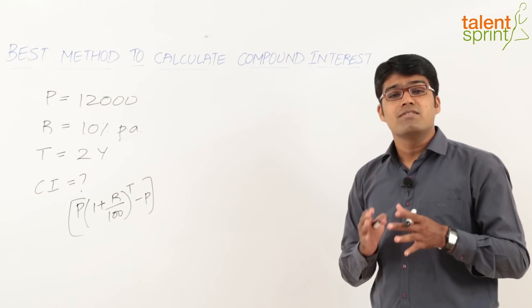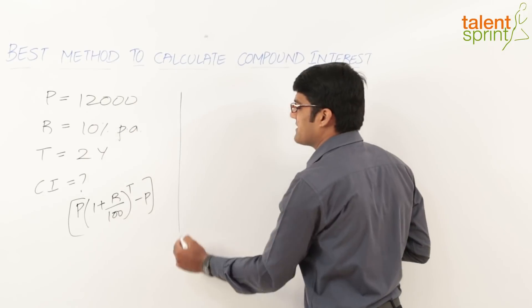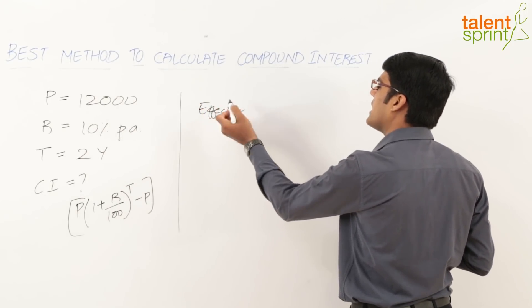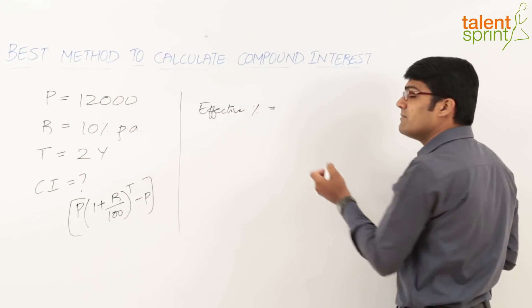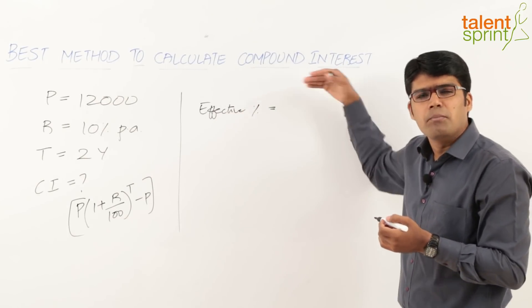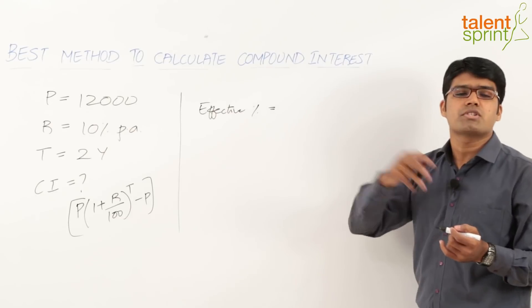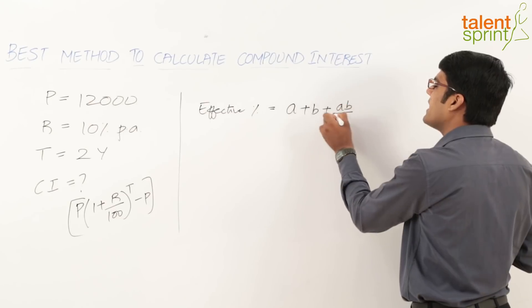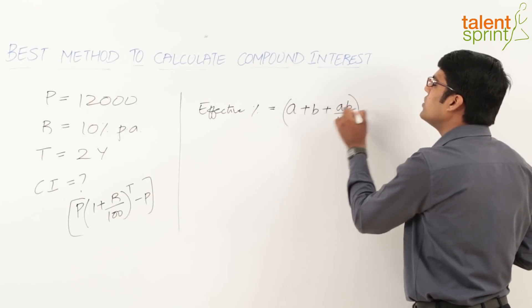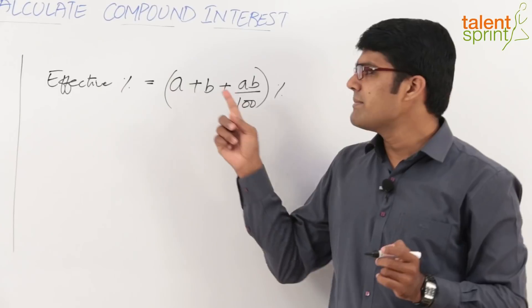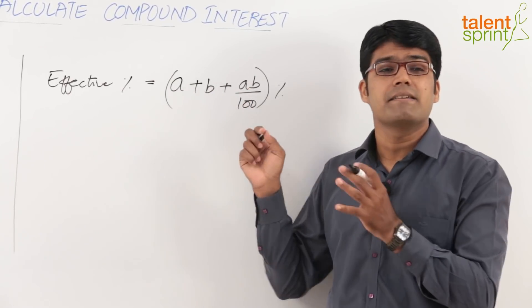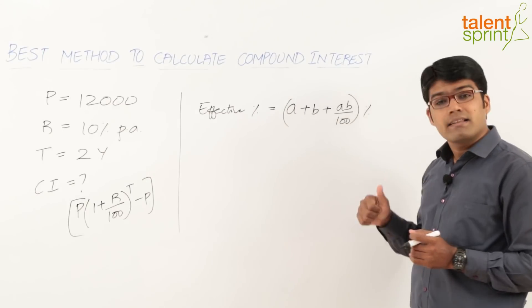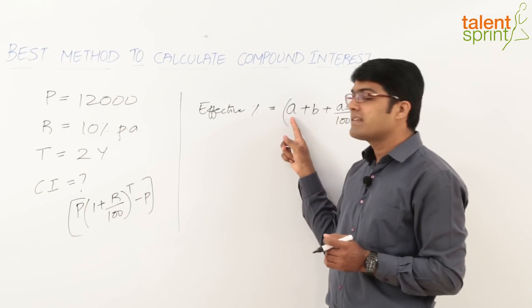We are going to use the concept of effective percentage. Effective percentage is a very important application useful for solving not just compound interest questions but many other aptitude questions. The effective percentage formula is: a + b + (a×b)/100, where a and b are two different percentages. Here, a denotes the rate of interest for the first year.